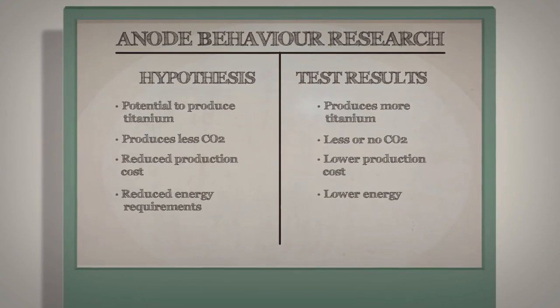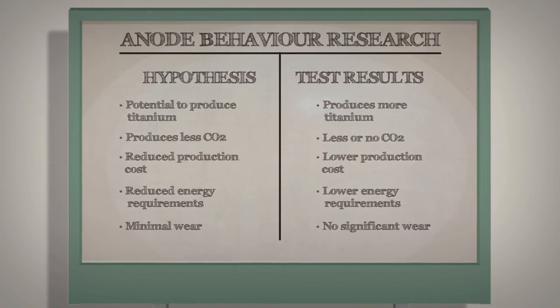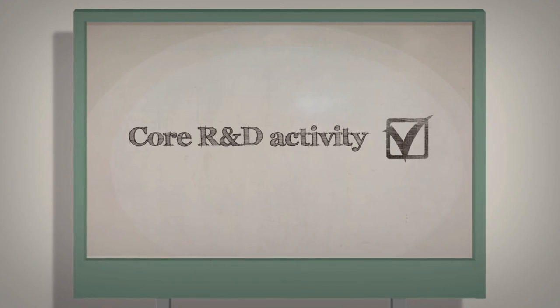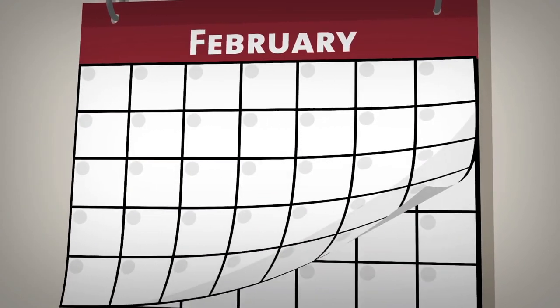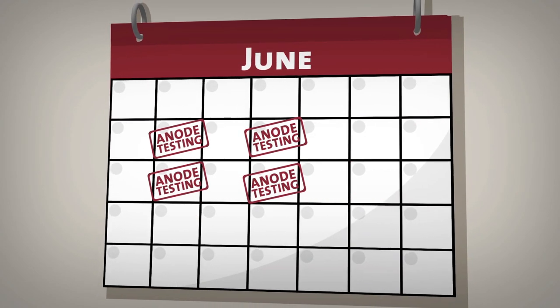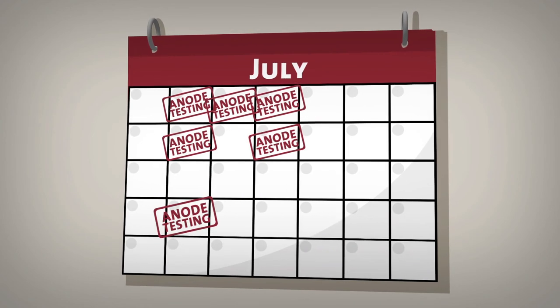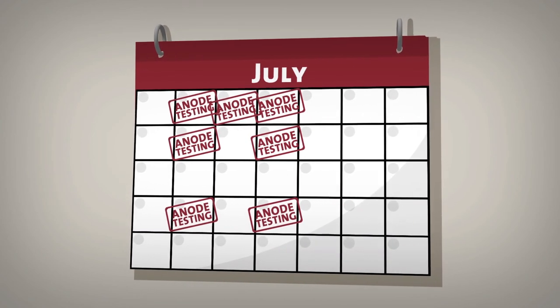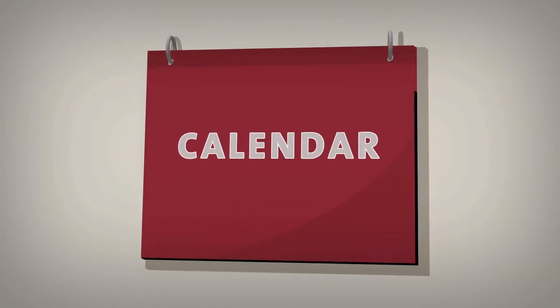The company developed a hypothesis about how the anode might behave and designed an experiment to test. The company self-assessed this activity as a core R&D activity. The testing of the new production scale anode needed to be conducted during a production run. The tests were only required to be conducted periodically and at a frequency to enable accurate statistical analysis. Otherwise, the production cell was not run for the purpose of the experiment and the expenditure of running the production cell was not claimed.